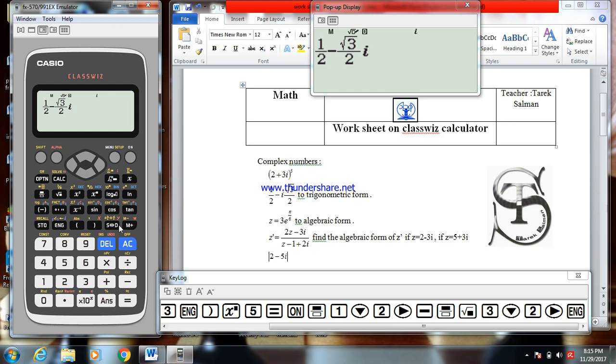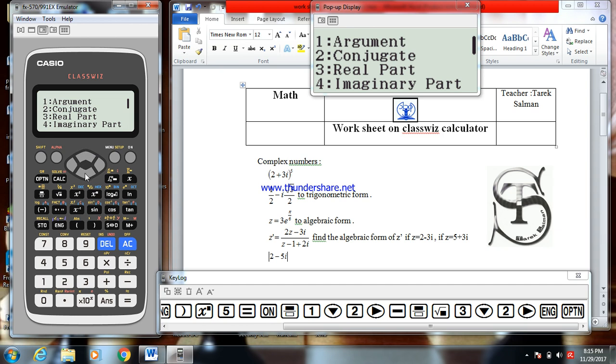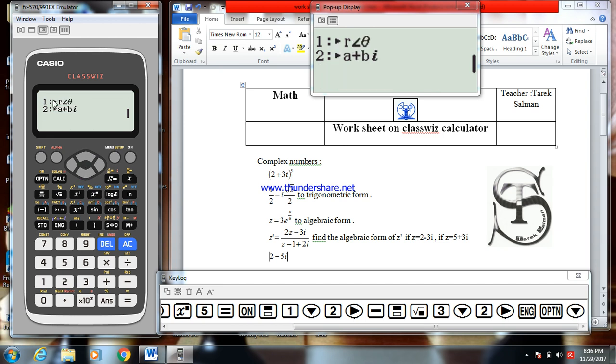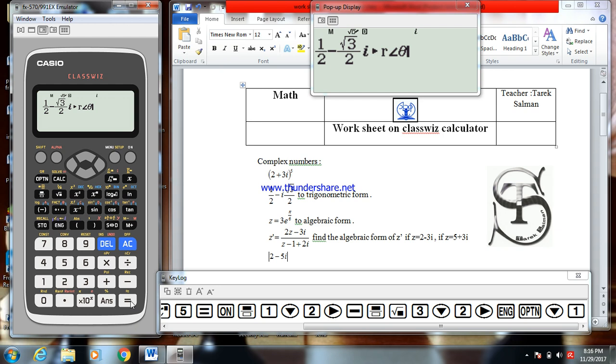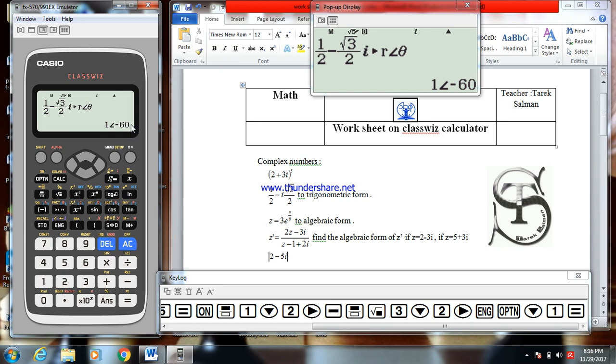To transform it to trigonometric form, go to option, navigate down. Here r theta. r theta to transform this number to the trigonometric form. 1 equal. 1 and minus 60. 1 is the modulus, minus 60 is the angle, the argument.